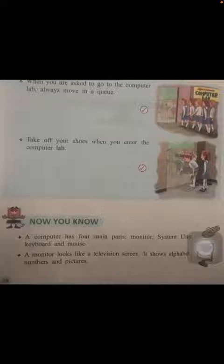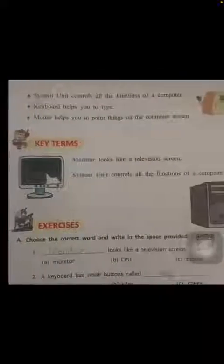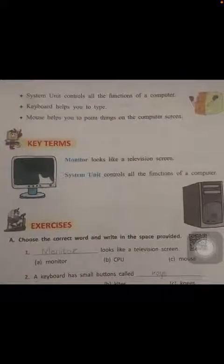We have learned about computer parts. A computer has 4 main parts: monitor, system unit, keyboard, and mouse. A monitor looks like a television screen — it shows alphabets, numbers, and pictures. The system unit controls all the functions of a computer, the keyboard helps you to type, and the mouse helps you to point things on the computer screen.